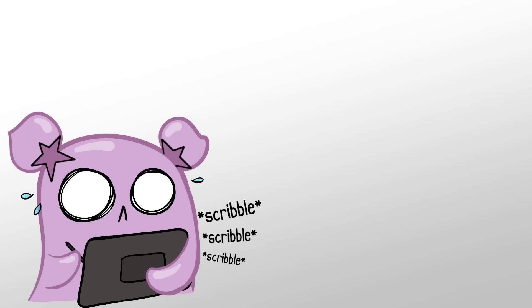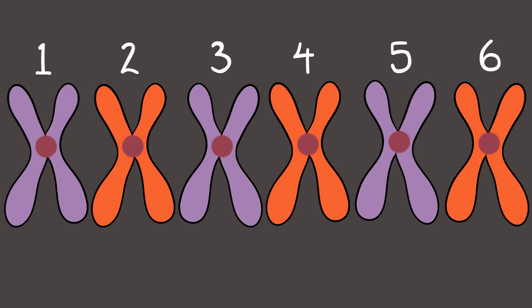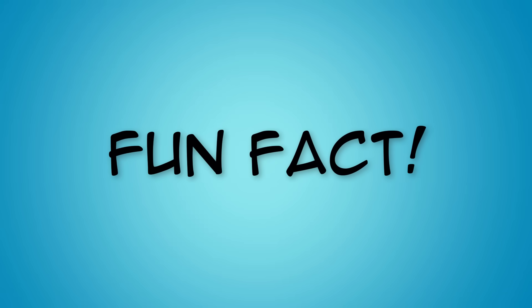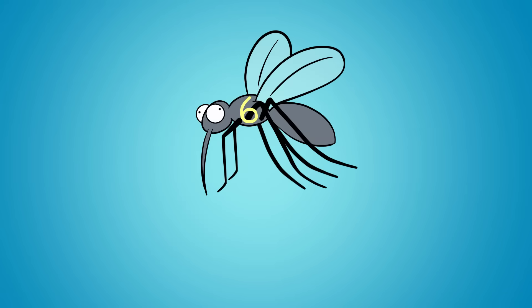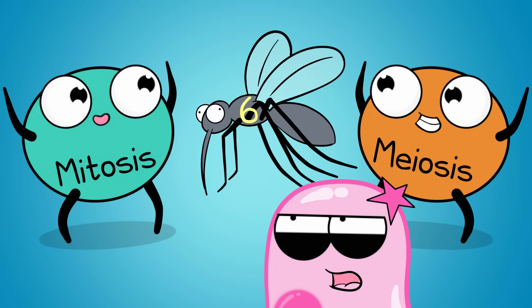It's really hard to draw 46 chromosomes, so we're going to use 6 chromosomes in our diagrams because it's much easier to draw and visualize. And just a fun fact—some insects have 6 chromosomes, like mosquitoes. I'm not a fan of mosquitoes, but mosquitoes do both mitosis and meiosis.